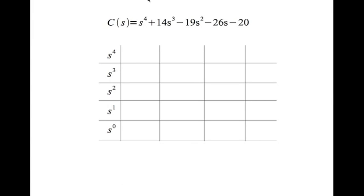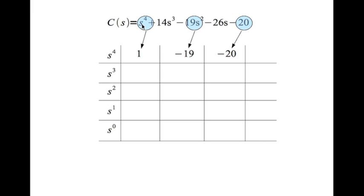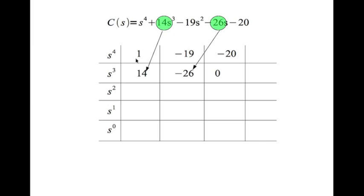Now let's apply the Routh criterion. We write down a table with a row for each power of s, starting with the highest power s⁴, then s³, s², s¹, and s⁰. The top row is filled from the characteristic equation: the coefficient of s⁴, then the coefficient of s², then the constant term — skipping one power of s each time. Similarly, the next row has the coefficient of s³, then s¹, skipping one power of s, with a zero where there is no term.